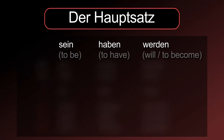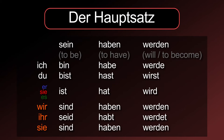The conjugations for these verbs are — Sein: ich bin, du bist, er/sie/es ist, wir sind, ihr seid, sie sind.